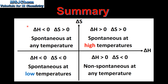So let's end with a summary. A reaction that has a negative value for delta H and a positive value for delta S is spontaneous at any temperature. A reaction that has a negative value for delta H and a negative value for delta S is spontaneous at low temperatures only. A reaction that has a positive value for delta H and a positive value for delta S is spontaneous at high temperatures. And finally a reaction that has a positive value for delta H and a negative value for delta S is non-spontaneous at any temperature.